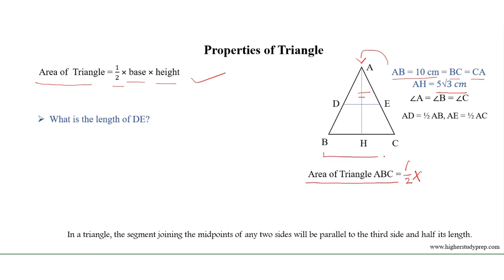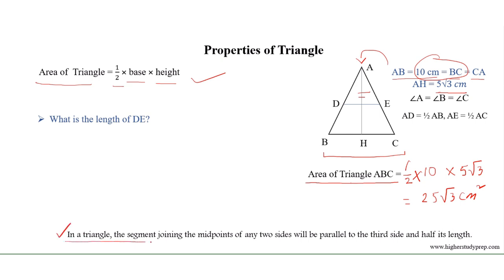So the area of triangle ABC is equal to half multiplied by the base BC, which equals 10 centimeters. So half multiplied by 10 multiplied by the height 5√3 gives the area of triangle ABC equals 25√3 centimeters square.